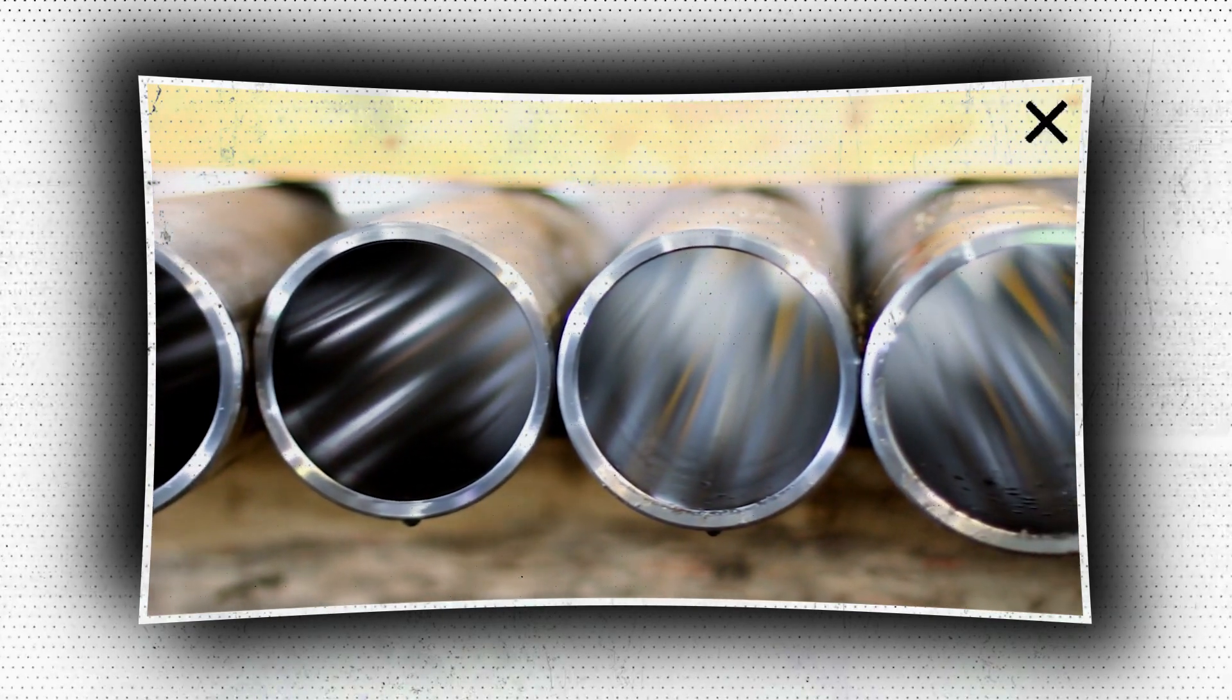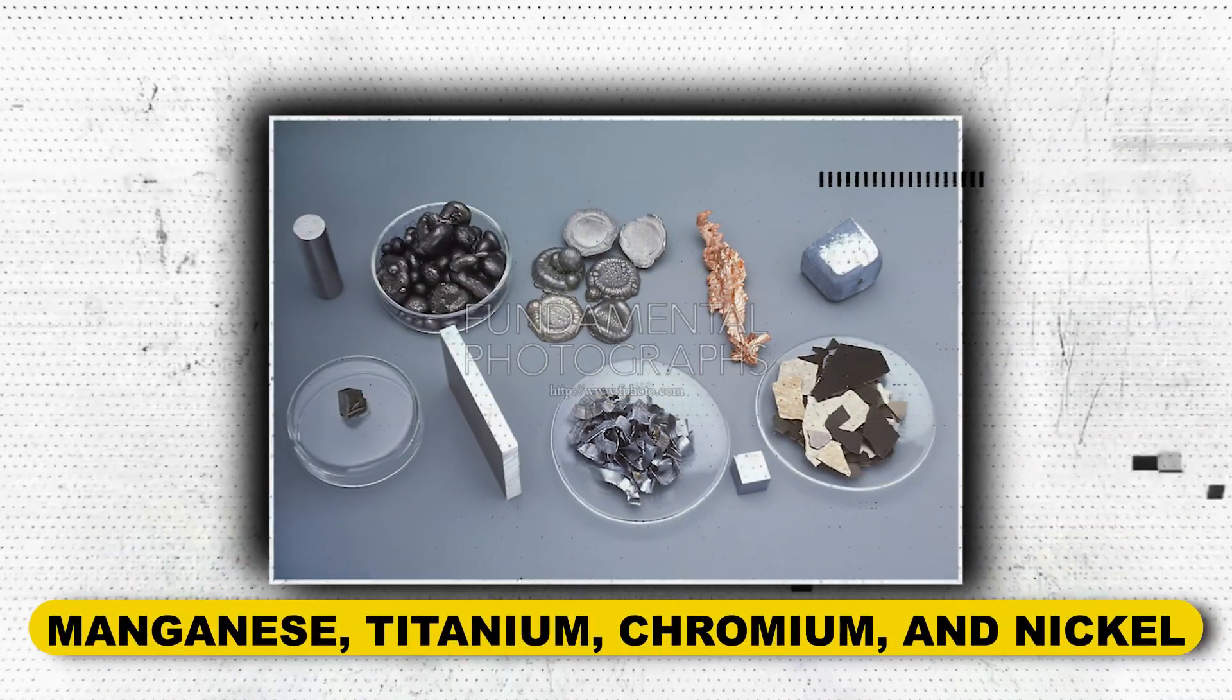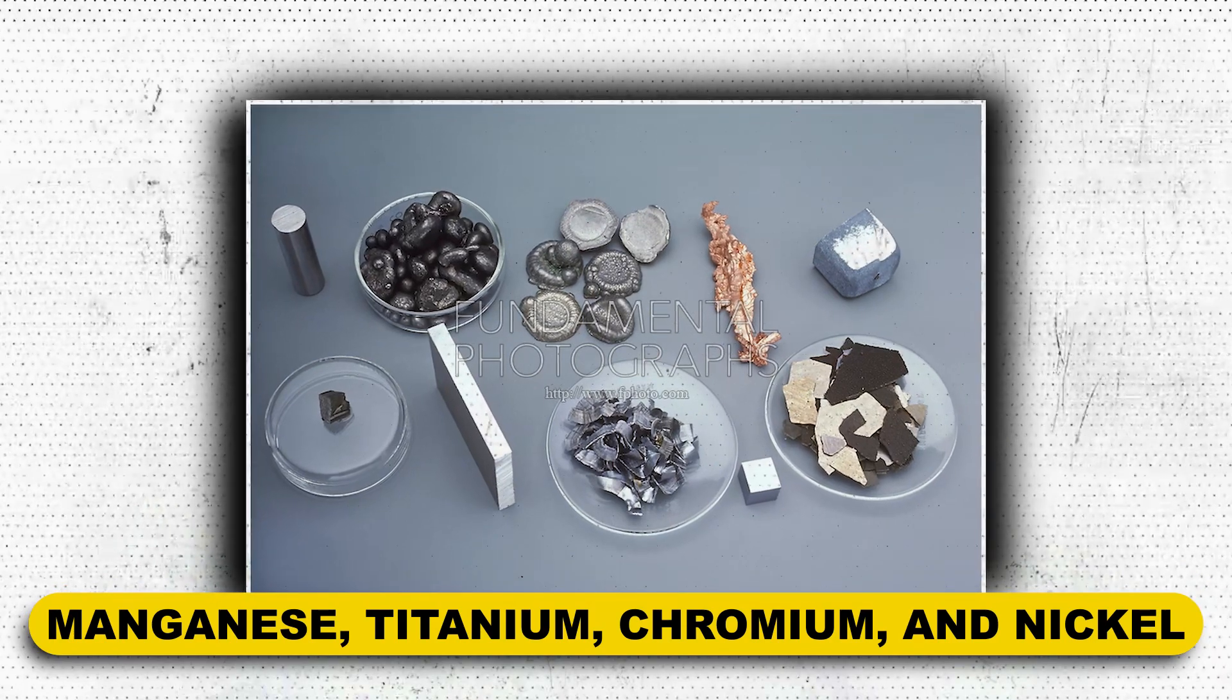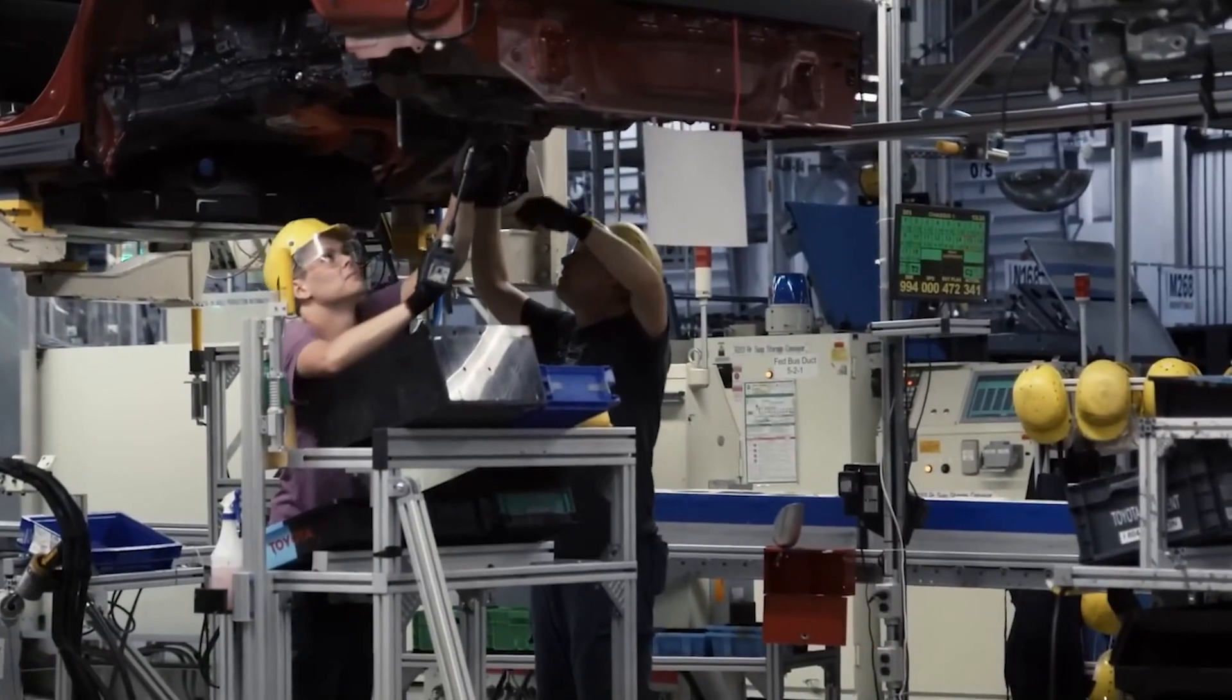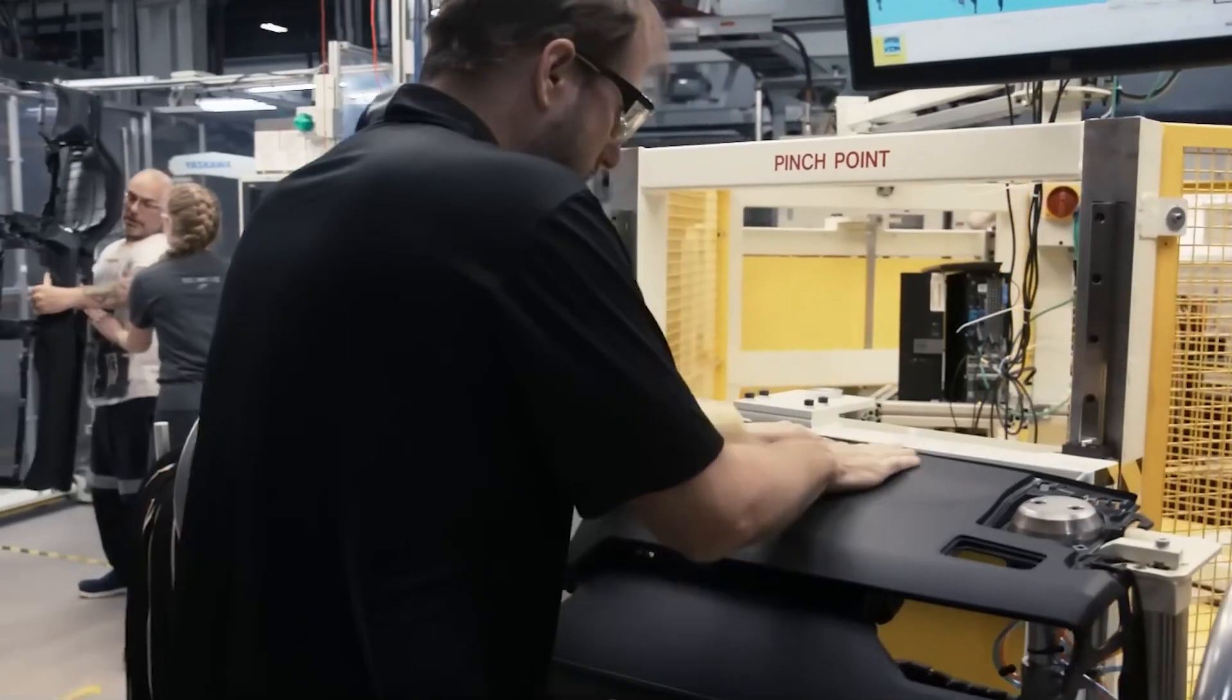By alloying their steels with an ever-changing list of specific elements such as manganese, titanium, chromium, and nickel, automakers are making practically constant upgrades to vehicle engines and structures.